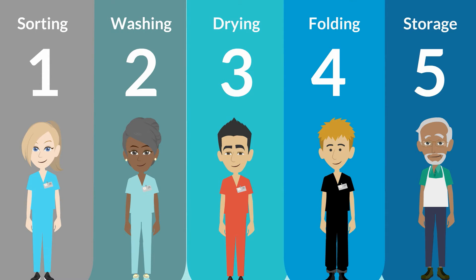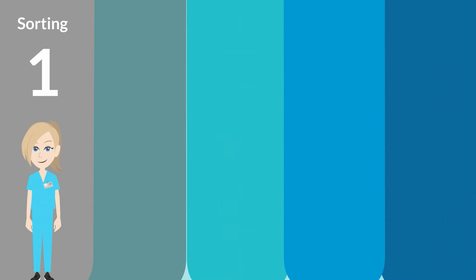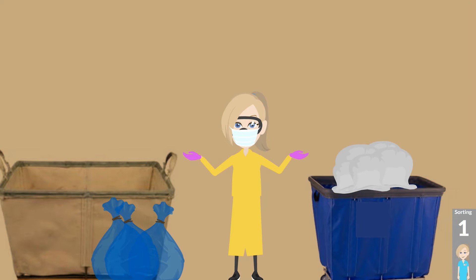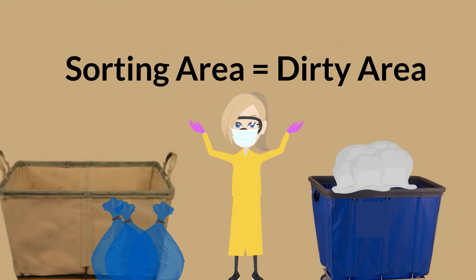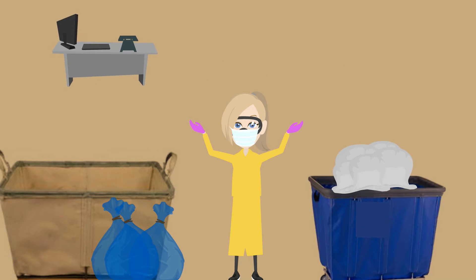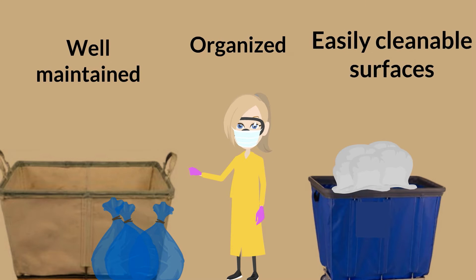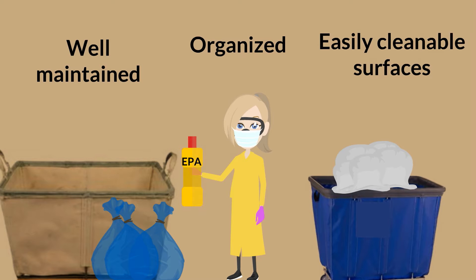Laundry cleaning process step number 1: Sorting. The bags of contaminated linen are delivered to the soil sort area, where the bag textiles are emptied out for sorting and classified by type of contamination to maximize the effectiveness of the laundry process. This designated dirty area must be physically separated from other clean areas of the laundry facility. Offices, break areas, and clean laundry processing areas should not be located within the dirty area. For infection control purposes, this dirty area should be well maintained, organized, and have surfaces that are easily cleanable using an EPA-registered hospital disinfectant.